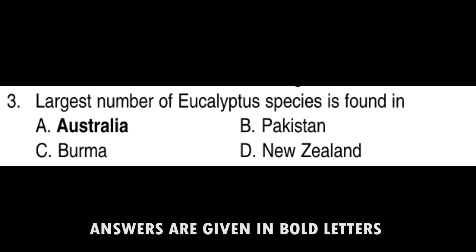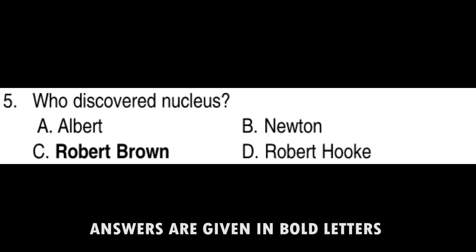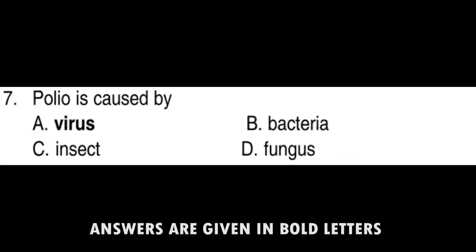The largest number of eucalyptus species is found in Australia. Fixation of nitrogen in soil is done by Bacteria. Who discovered the nucleus? Robert Brown. What is the botanical name of paddy?